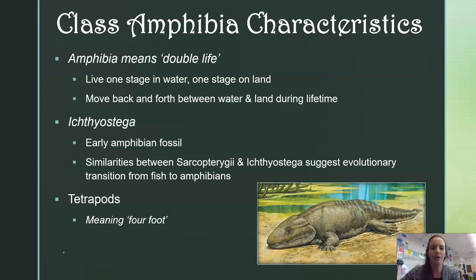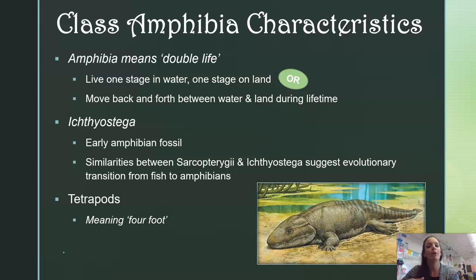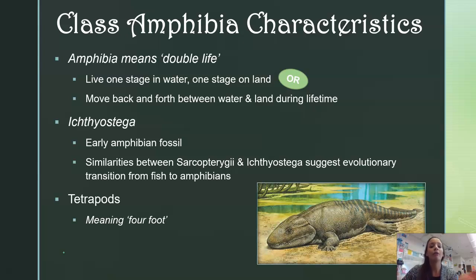The name amphibia itself means double life, because amphibians do one of two things: they either live one stage of their life in water and one stage on land, or they move back and forth between water and land during their lifetime. The earliest amphibian fossil suggests that evolutionary transition from fish, who spend their entire lifetime in water, to amphibians spending part of their lifetime on land. The name of this fossil is Ichthyostega.